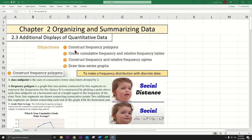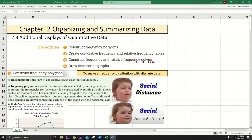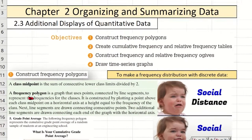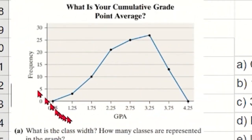I want to show you how to make a frequency polygon on StatCrunch, how to work on a cumulative frequency polygon or table, and also how to do an ogive. Let's get to it — we'll start with the frequency polygon.